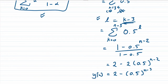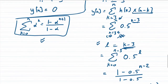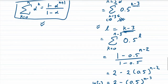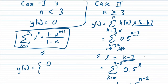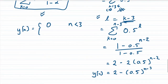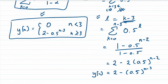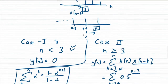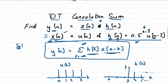Hence we have two cases for y(n): it equals 0 when n is less than 3, and it equals 2 - 0.5^(n-3) when n is greater than or equal to 3. This is the convolution sum of the two signals x(n) and h(n).